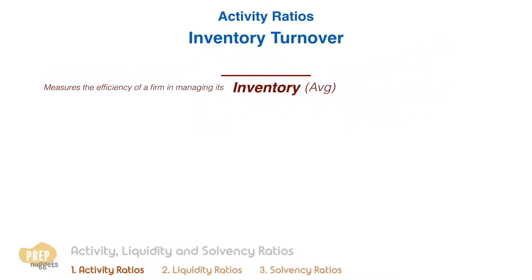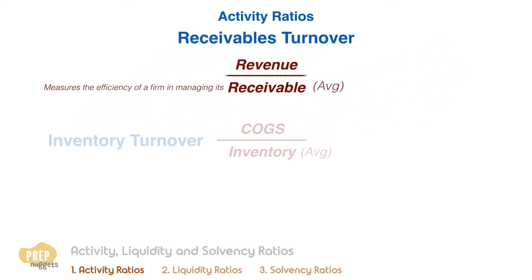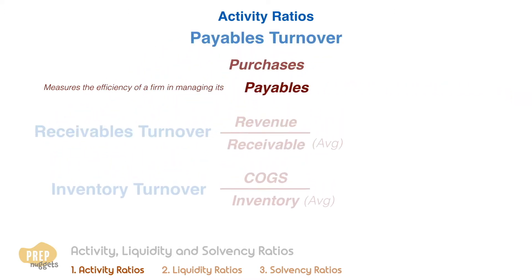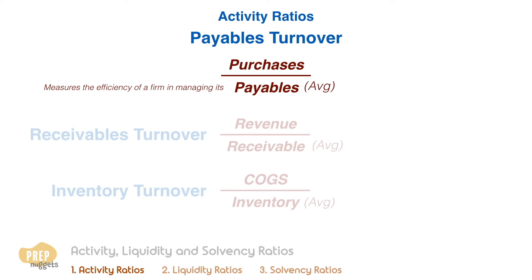Inventory turnover is a measure of how efficiently a firm manages its inventory. Note that the numerator here is the cost of goods sold instead of revenue. Receivable turnover is a measure of how efficiently a firm manages its receivables, measured by revenue for the period divided by average receivables. Payables turnover measures how efficiently a firm manages its trade credit, calculated as purchases for the period divided by average payables. Purchases can be calculated as ending inventory minus beginning inventory plus cost of goods sold.